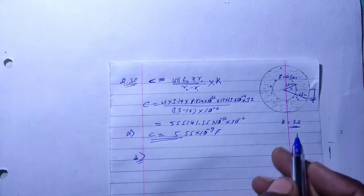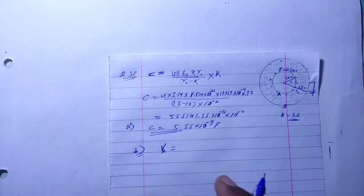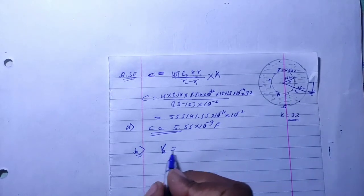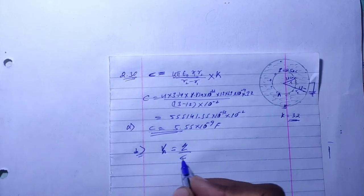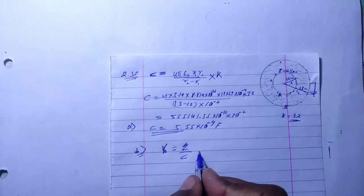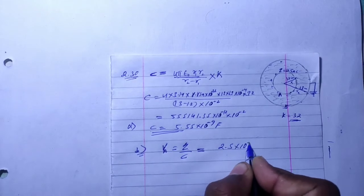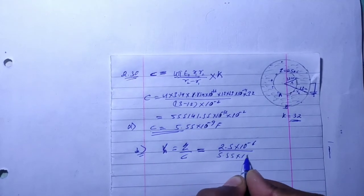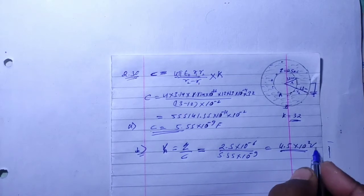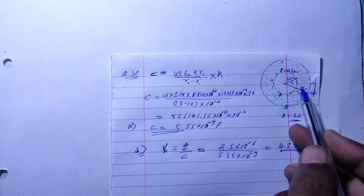For part B, the potential of the inner sphere: since the outer sphere is grounded, its potential is 0. The potential difference is V = Q / C = 2.5 × 10⁻⁶ divided by 5.55 × 10⁻⁹, which gives approximately 4.5 × 10² volts, i.e., 450 volts.